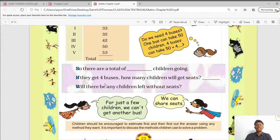There are a total of dash children going. How many? 210. If they get 4 buses, how many children will get seats? We have calculated in 4 buses, 200 can be occupied. 200 children can get seats. Will there be any children left without seats? Yes. The total is of 210. And buses can accommodate 200. The difference between the 210 and 200 is 10. 10 children will be left without seats.